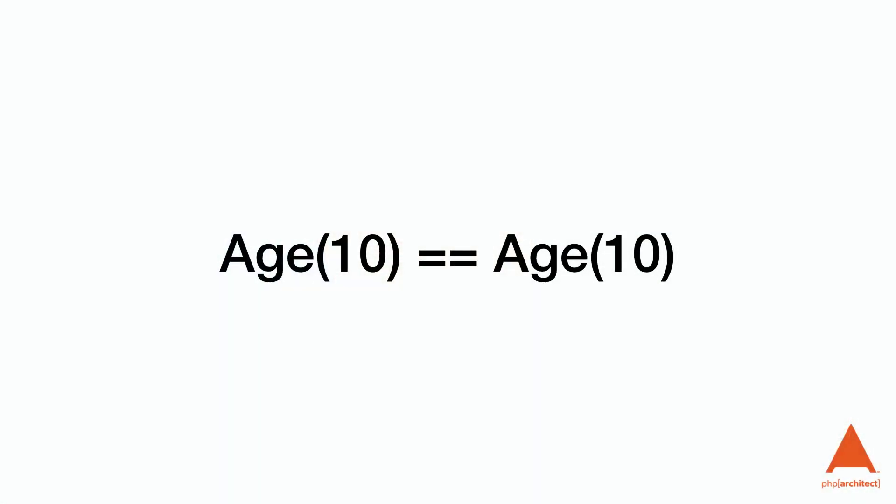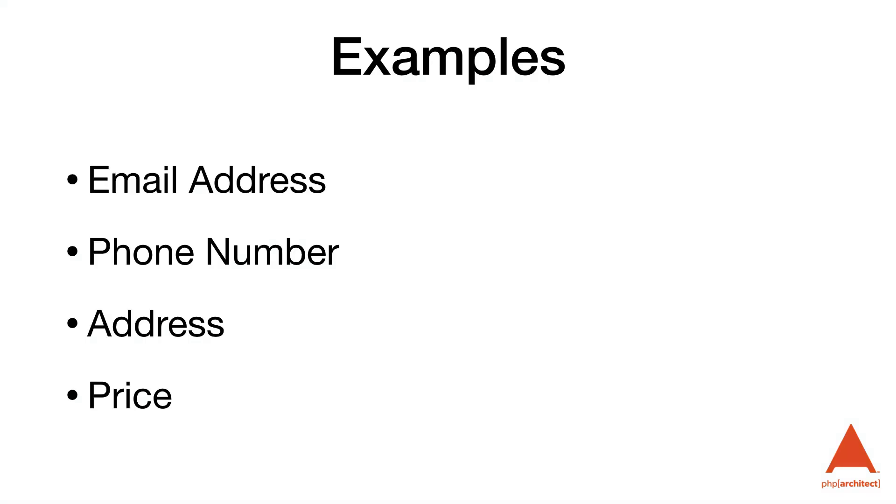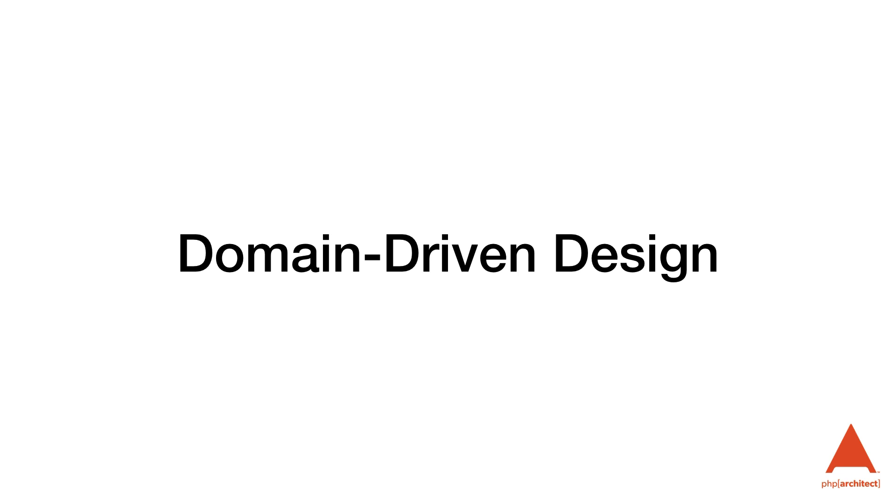What are value objects? At a very high level, value objects are used to represent typed values that have no conceptual identity of objects inside of our domain. A value object wraps data and is distinguishable only by its properties, so two value objects with the same properties are considered equal. Examples of potential value objects include email addresses, phone numbers, addresses, and prices. Value objects were introduced in Domain Driven Design, or DDD for short — a software design approach to design complex application domains based on input from domain experts. We'll cover this in a future video, but thankfully we can use value objects anywhere even without using the rest of DDD.